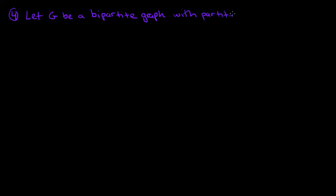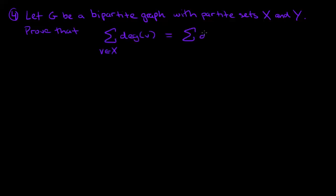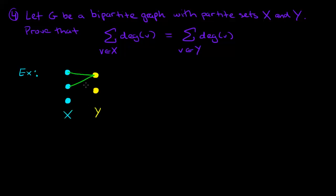For our next problem, let G be a bipartite graph with partite sets x and y. Prove that the sum of the degrees of vertices v where v is taken from x is equal to the sum of the degrees of vertices v where v is taken from y. Let's start with a small example: three vertices in one partite set and two in the other. I'll put in some bipartite edges — edges that go between set x and set y. This vertex has degree one, this one has degree two, and this one has degree one. Over here the vertices have degree three and one.